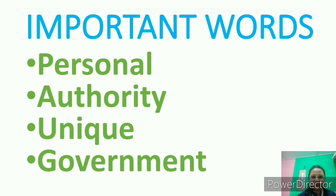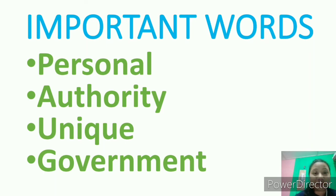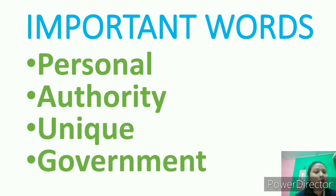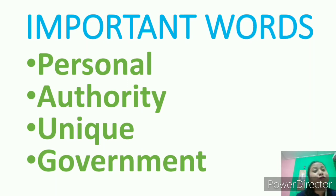Today's class introduced many new words. The four most important ones are: Personal — meaning details concerning us, like name, date of birth, place of residence, phone number, father's name, mother's name. Authority — meaning one who is in charge. Unique — meaning different from all others; as discussed with the Aadhar card, every citizen has their own unique 12-digit code different from others. Government — referring here to our Indian government.